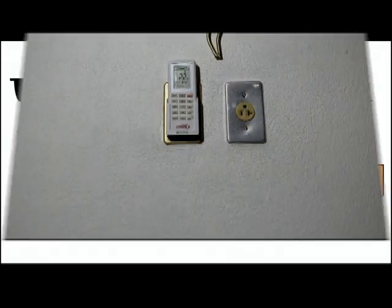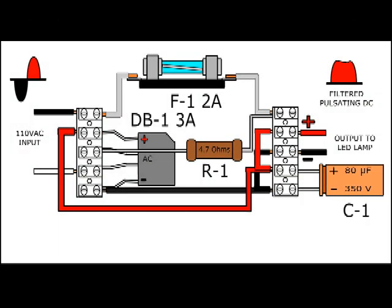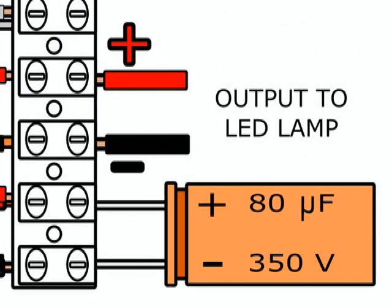Before plugging to the household current, we can hook the LED lamp directly to the output of the circuit we just built, that is, to the output of the red and black cables.